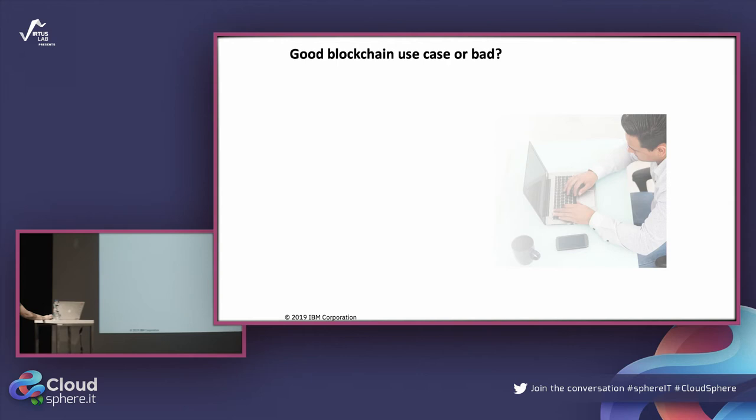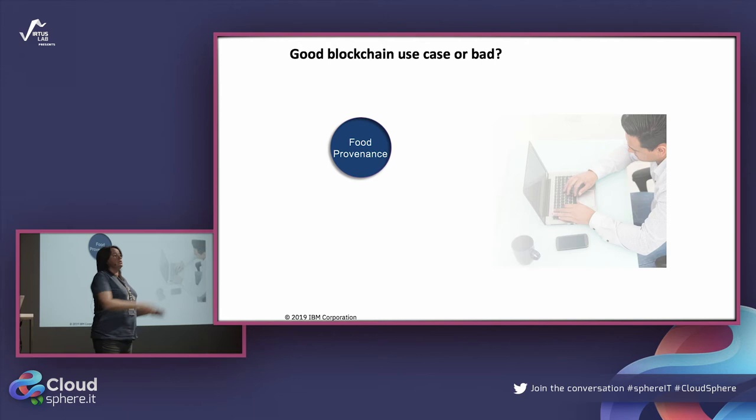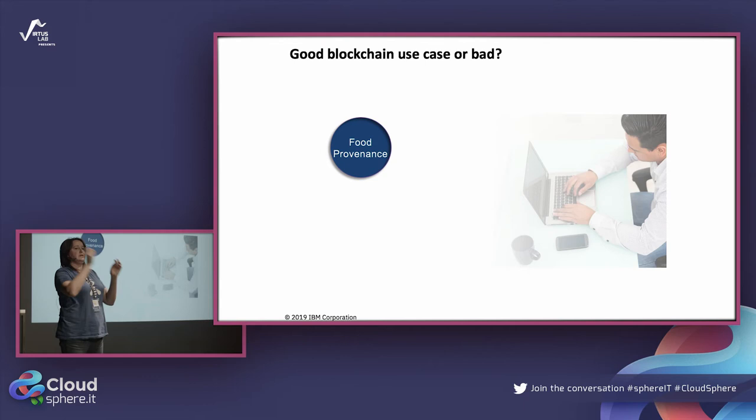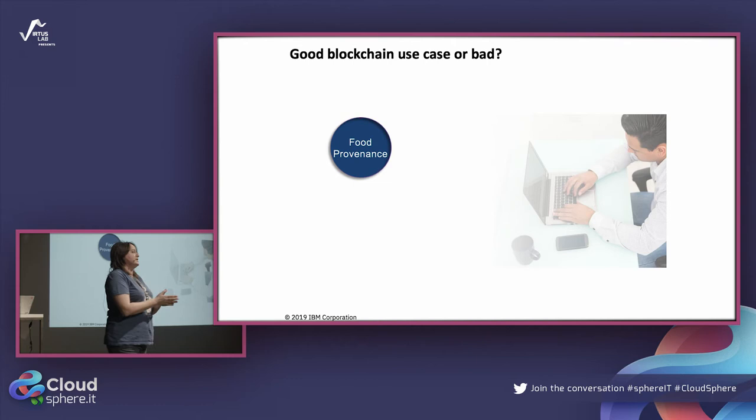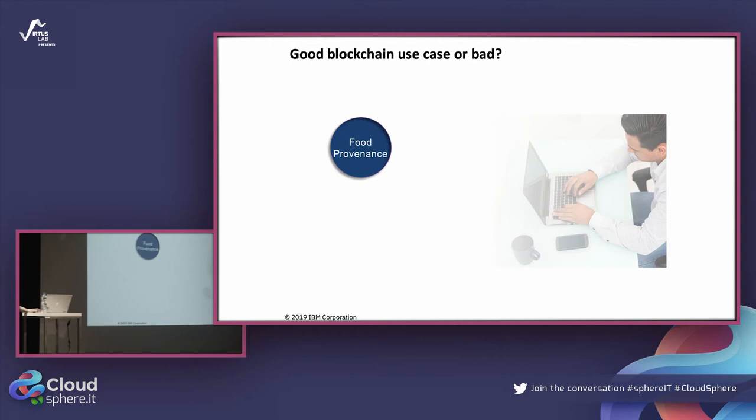Now let's play a game. What do you think about food provenance as a blockchain use case? Things like: I really need to know where my apple was harvested, where it was stored, which certifications it got, to which wholesaler it went, and to which supermarket. Does it match all the characteristics we described? Yes — it's a good blockchain use case. In fact, it's one of the successful ones I'm going to show you.